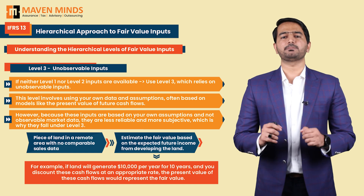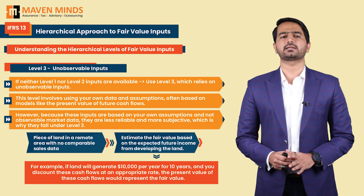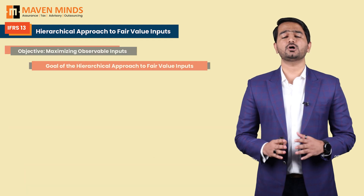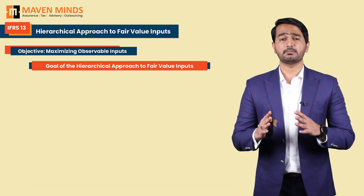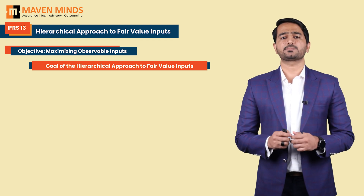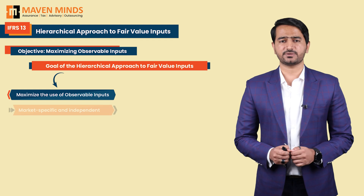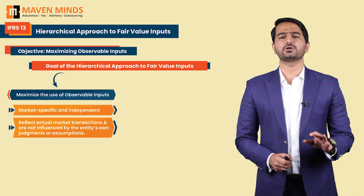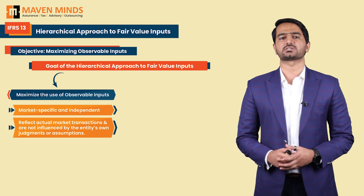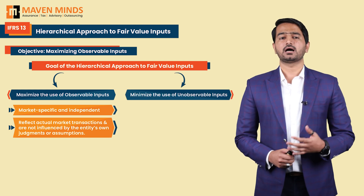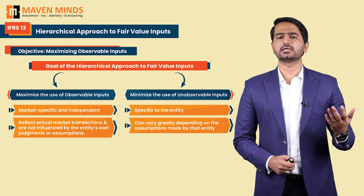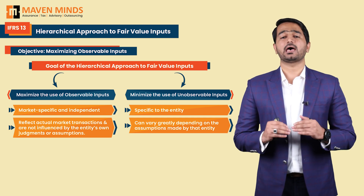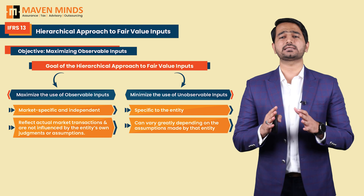However, because these inputs are based on your own assumptions and not observable market data, they are less reliable and more subjective — which is why they fall under Level 3. The goal of this hierarchical approach is to use as many observable inputs as possible. Observable inputs are preferred because they are market-specific and independent, reflecting actual market transactions and not influenced by the entity's own judgments. Unobservable inputs vary greatly depending on entity-specific assumptions, so we aim to minimize their use.